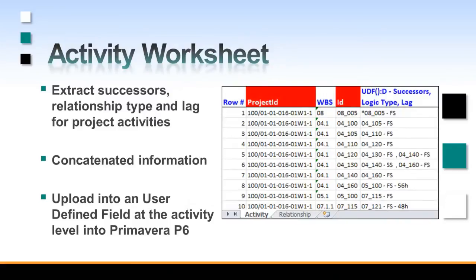In the following exercise, with the help of Emerald P6 Loader, we will be extracting information on activities. We will extract successor, relationship type, and lag. The next step will be to concatenate this information into one column, and then download it into an activity user-defined field that has already been created in Primavera for this workshop demonstration.